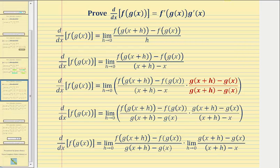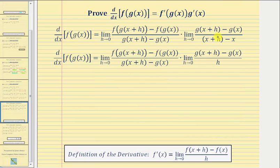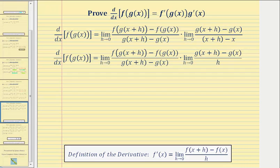Let's take a look at this second limit first. Notice how we can simplify the denominator because we have the quantity x plus h minus x, which simplifies to h. In this form we should recognize this is the difference quotient for g of x, and therefore the limit as h approaches zero of this difference quotient gives us g prime of x. This form emphasizes this is the limit as h approaches zero of the change in outputs divided by the change in inputs, where the inputs are x plus h and x.